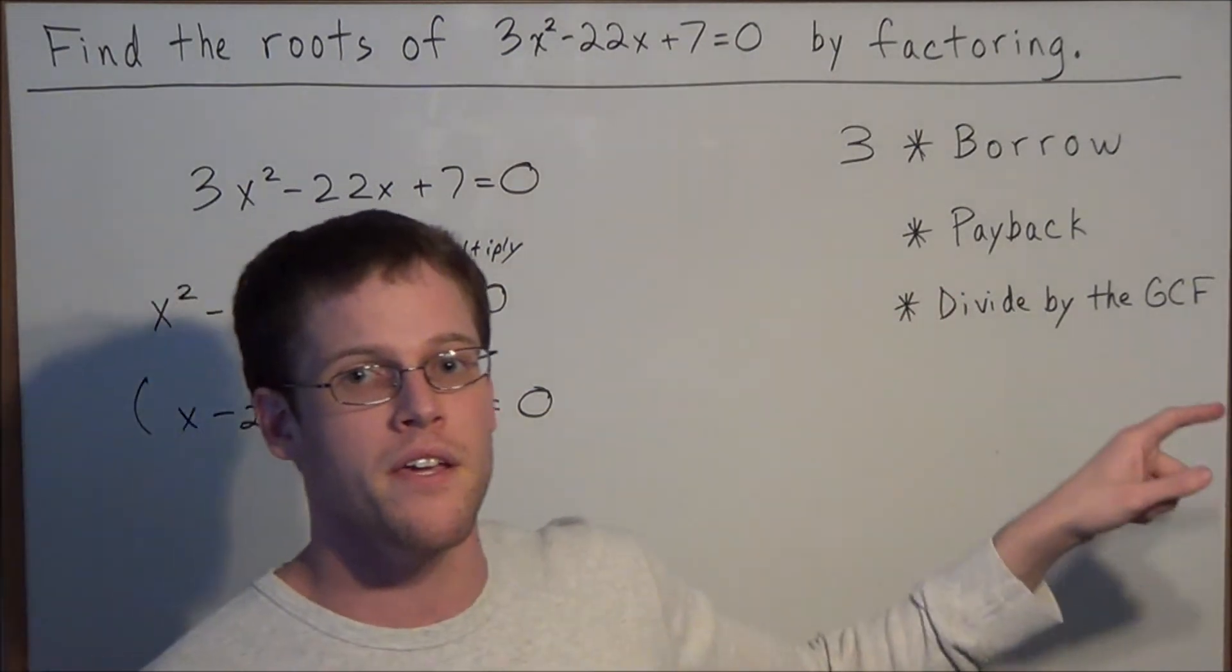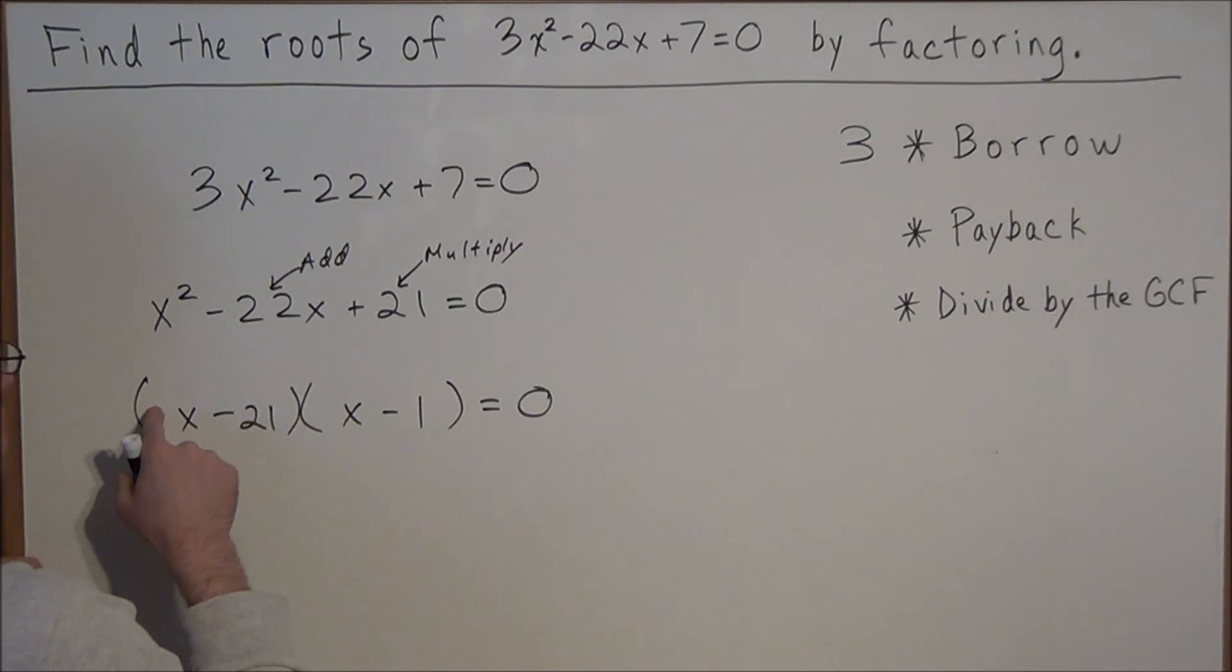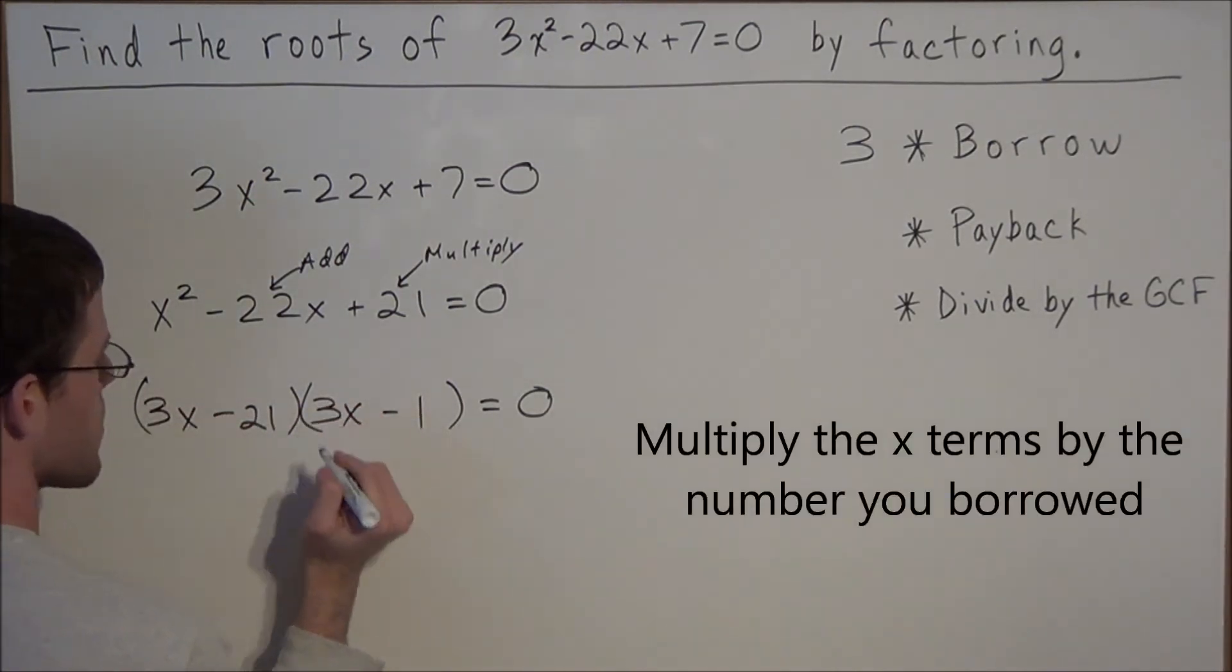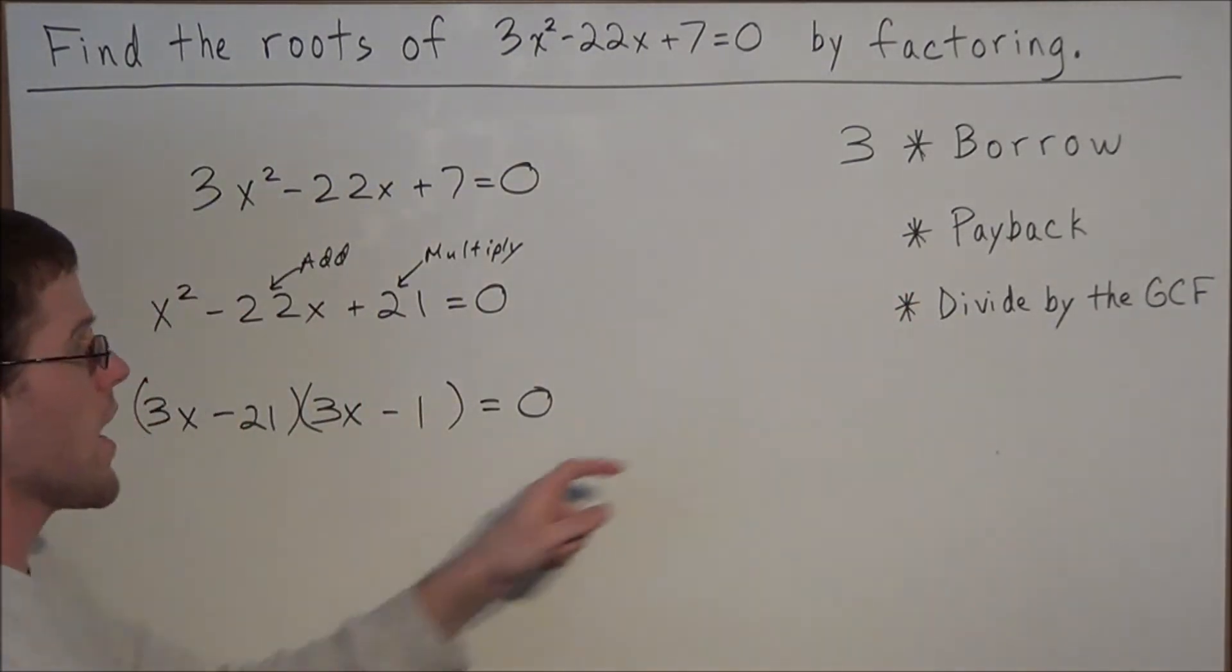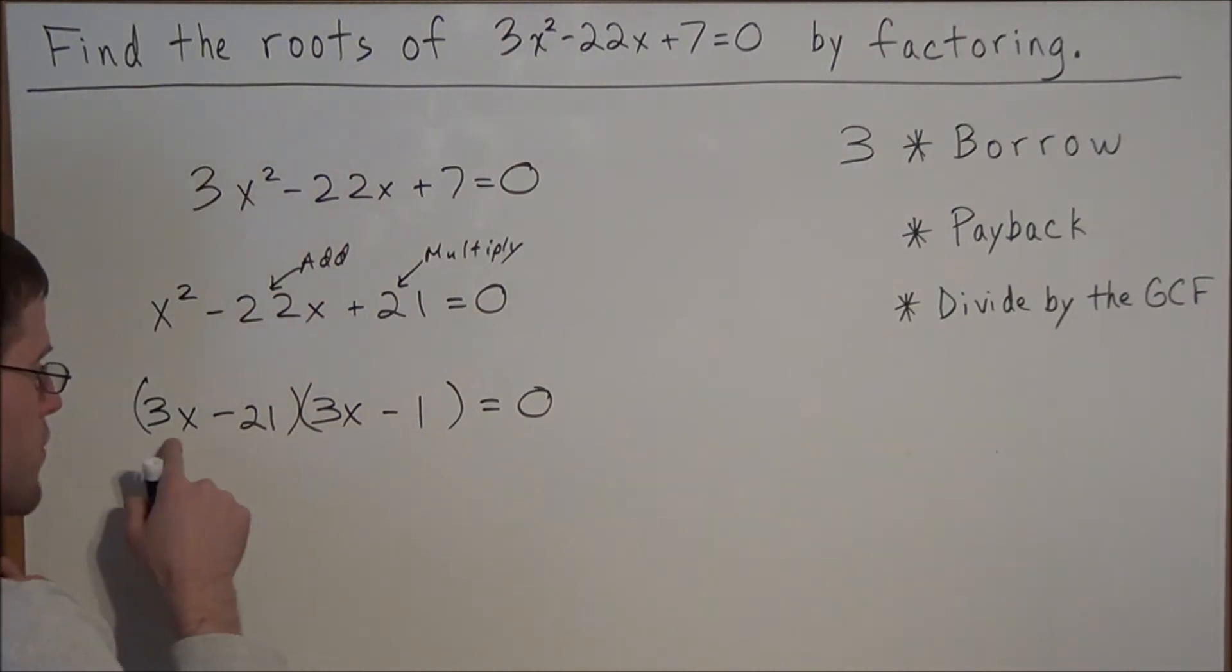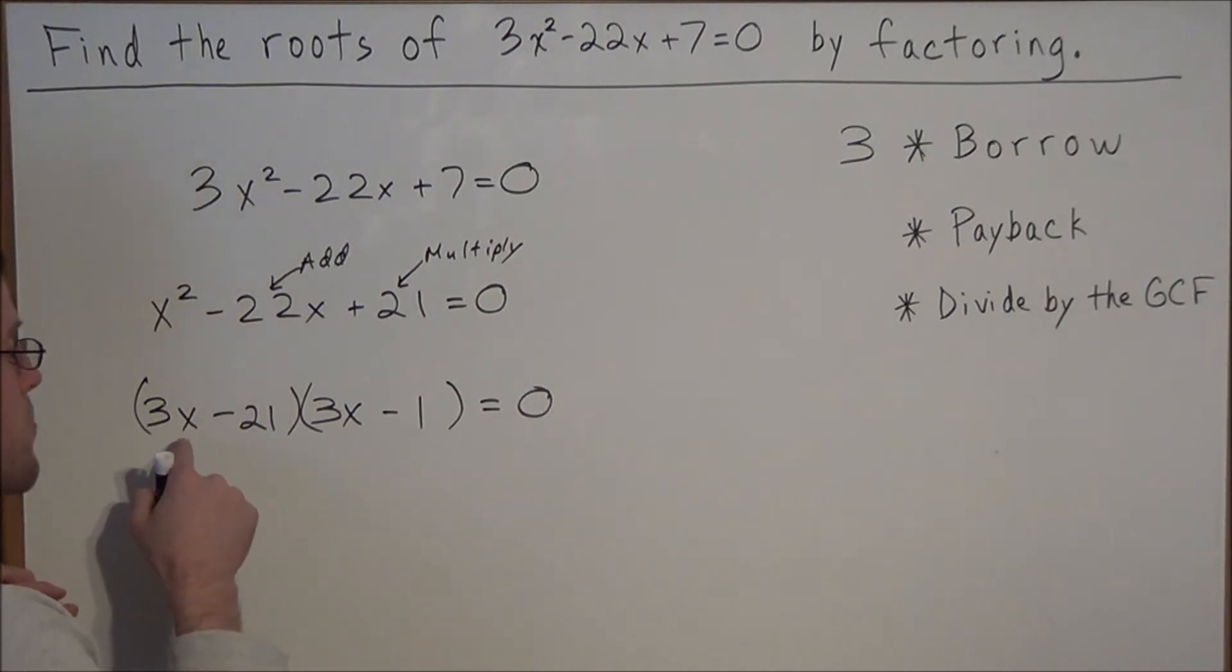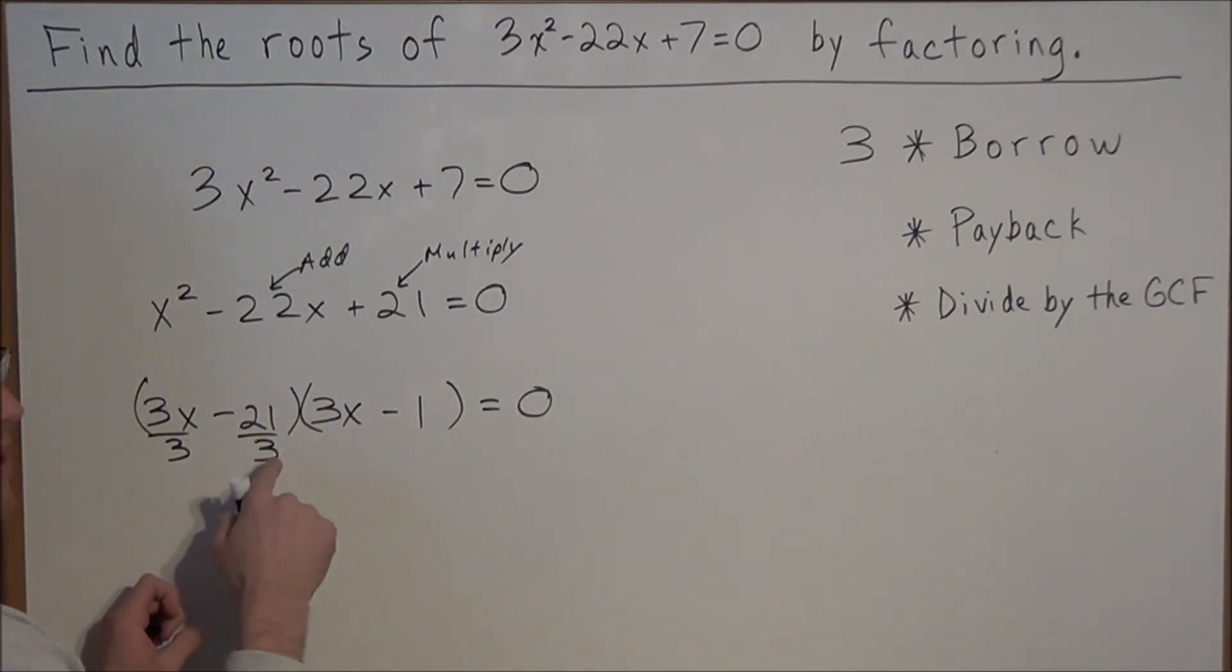But now this is the part where we need to pay the 3 back. We are going to multiply the first two terms of this binomial by 3. We are paying the 3 back. Now the last step of this process is to divide both binomials by their GCF. For the first binomial, the GCF or greatest common factor of 3x and negative 21 is 3. We are going to divide both of these terms by their GCF of 3.